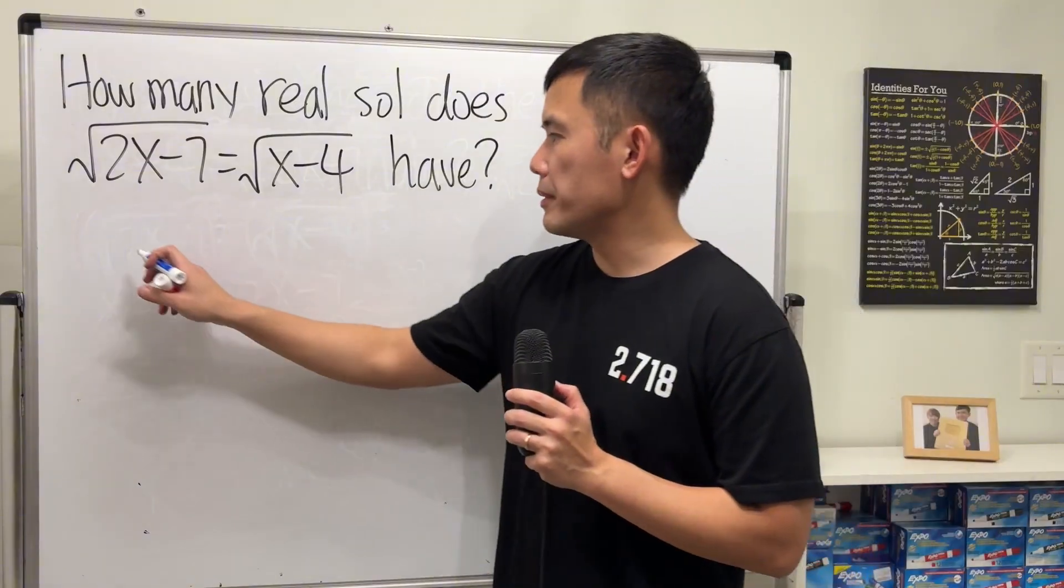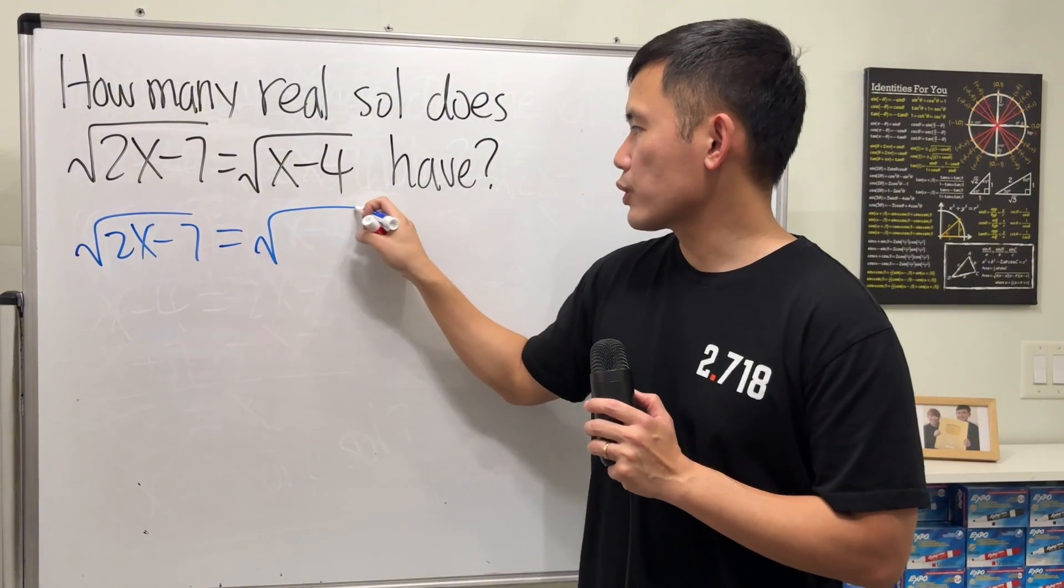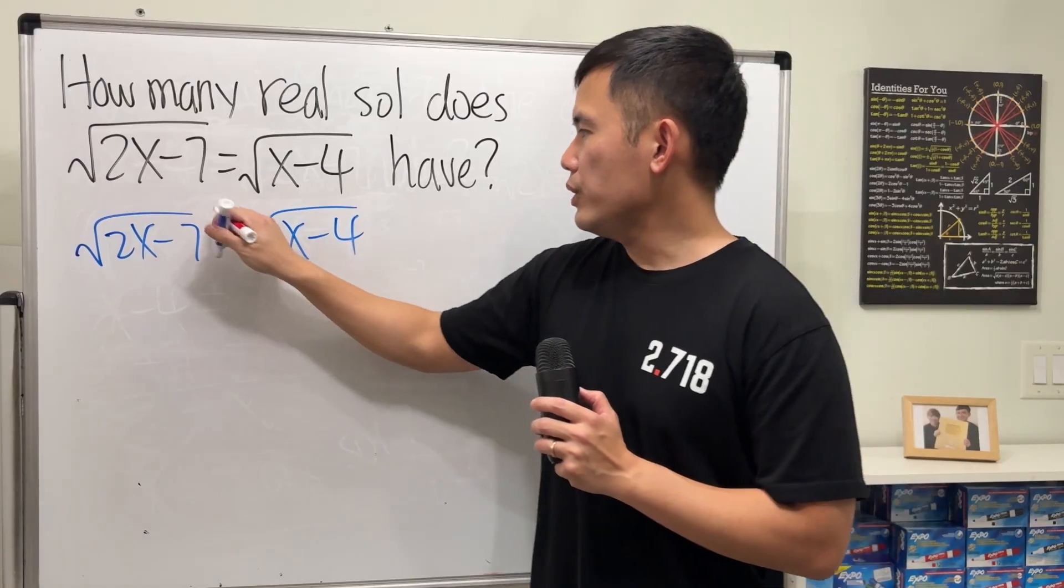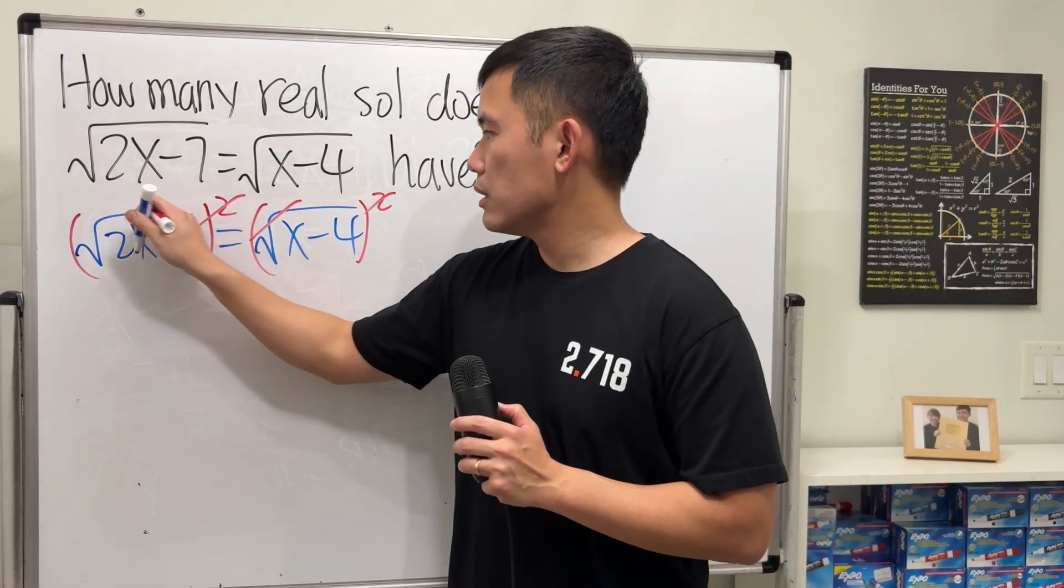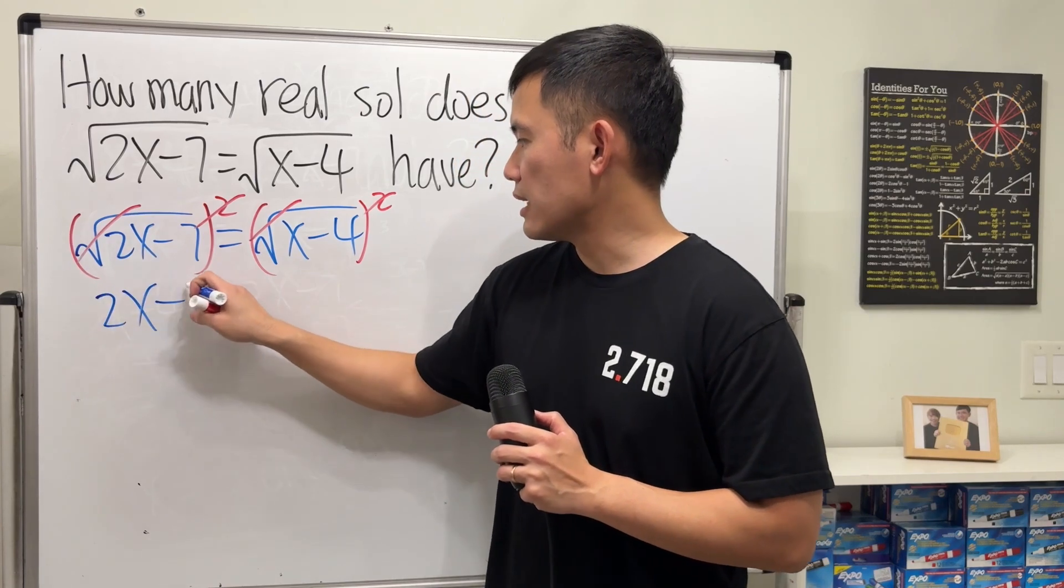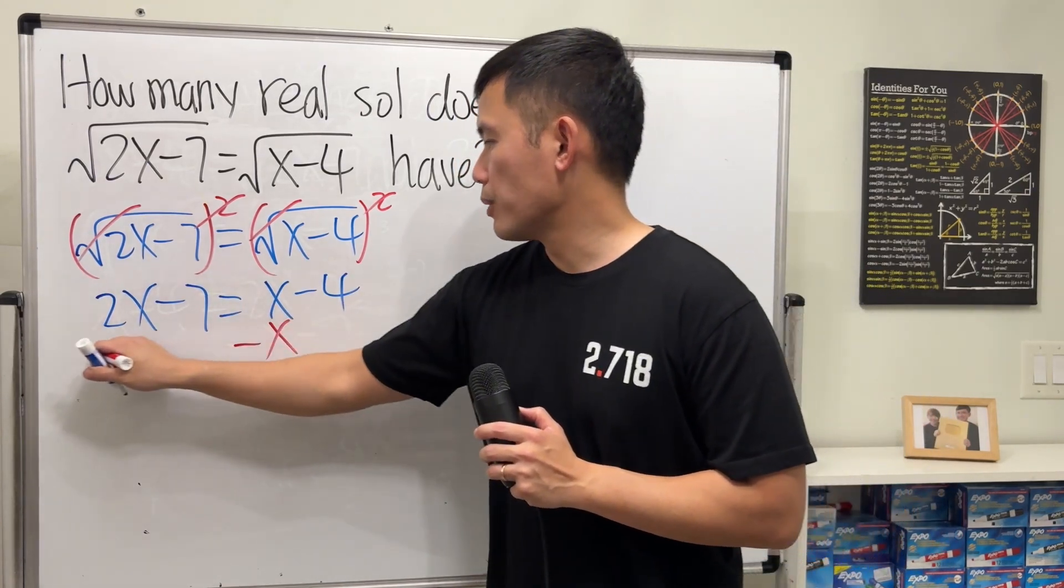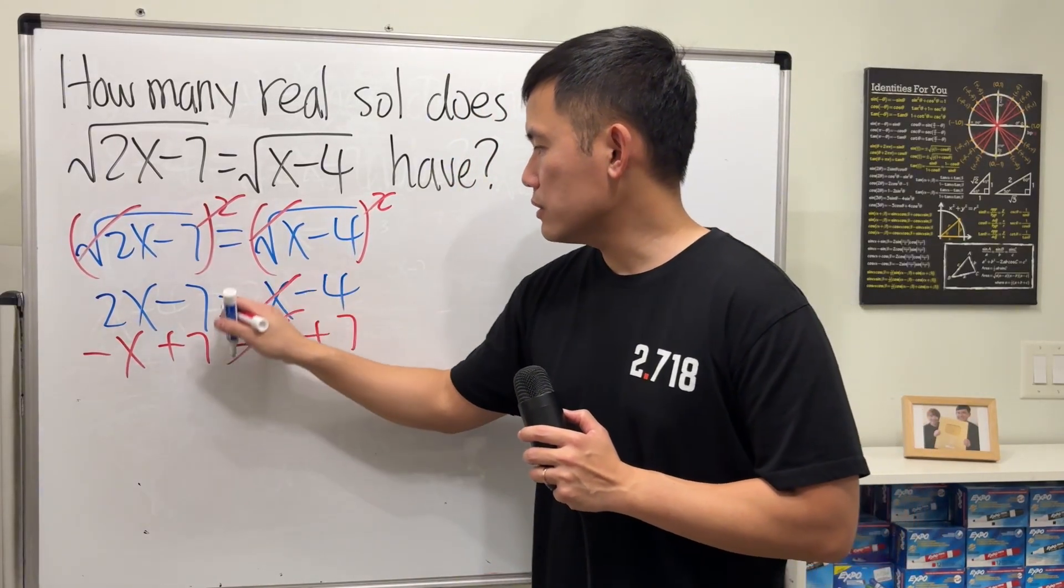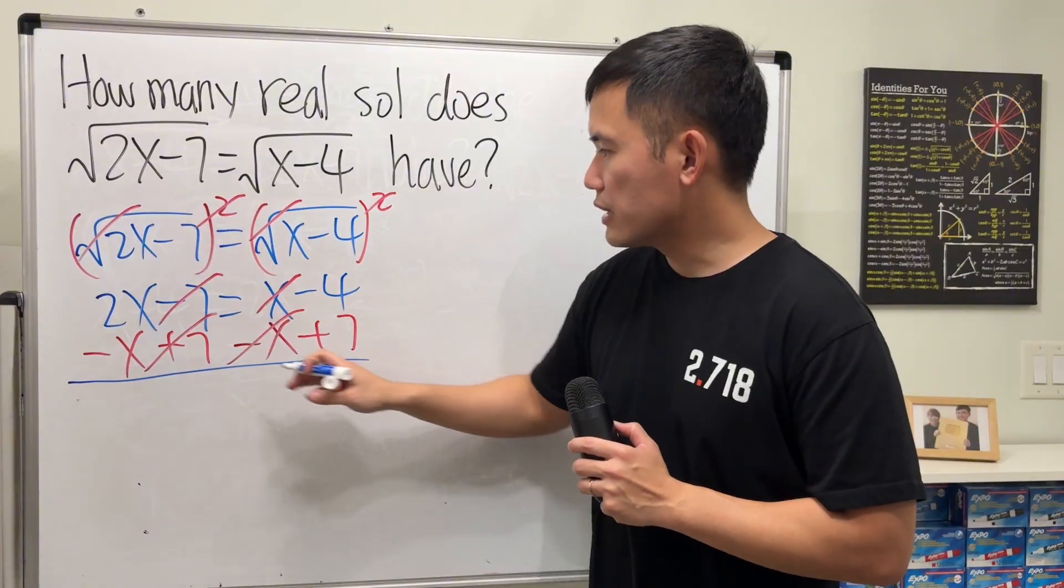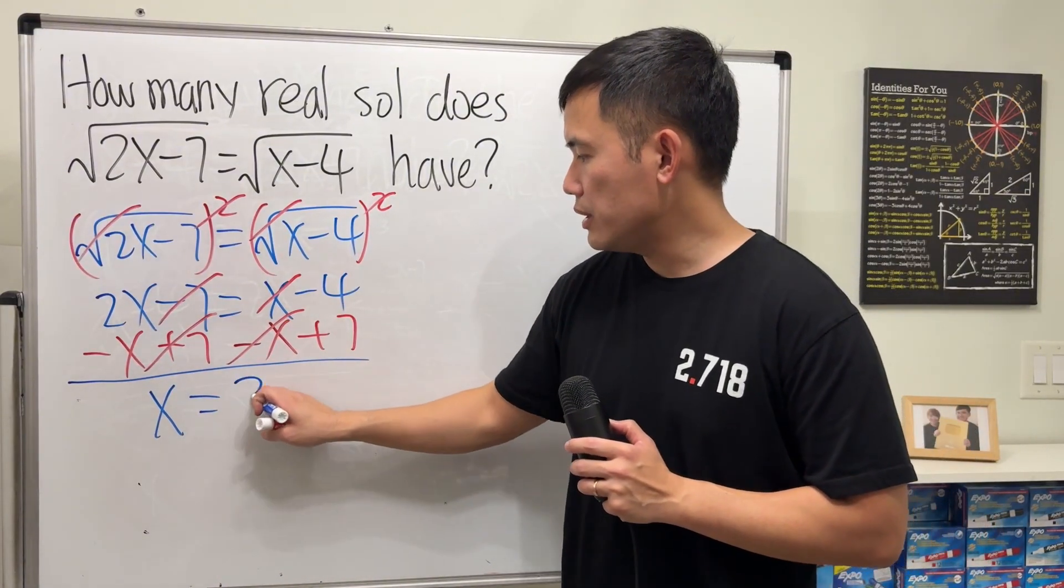And at first, you may be thinking, we have square root of 2x minus 7 is equal to square root of x minus 4. We can just square both sides, cancel, and then we get 2x minus 7 is equal to x minus 4. Subtract x from both sides, add 7 to both sides, cancel, and we just get x by itself, it's equal to negative 4 plus 7 is 3.